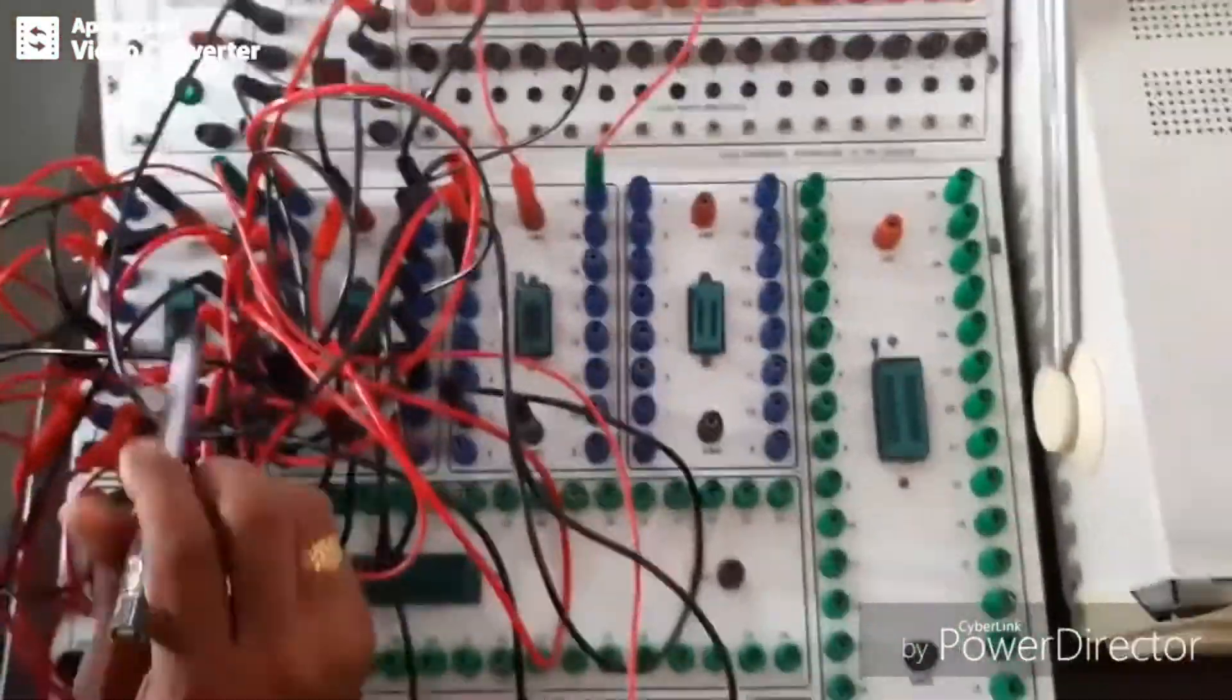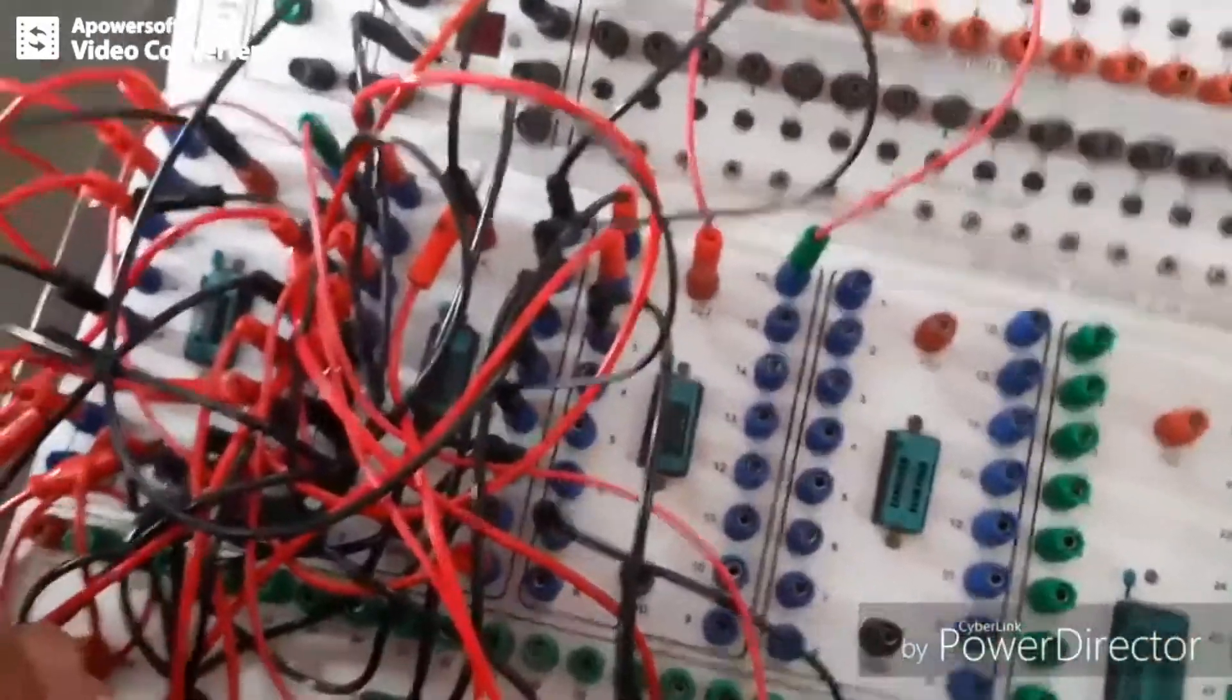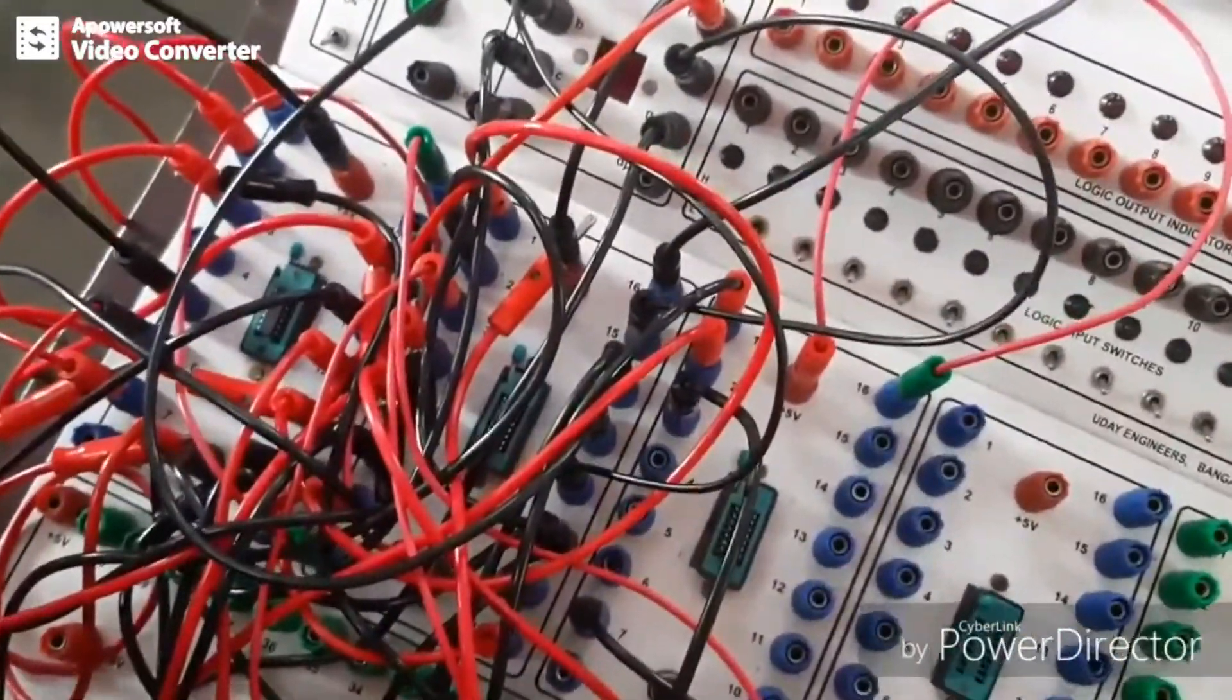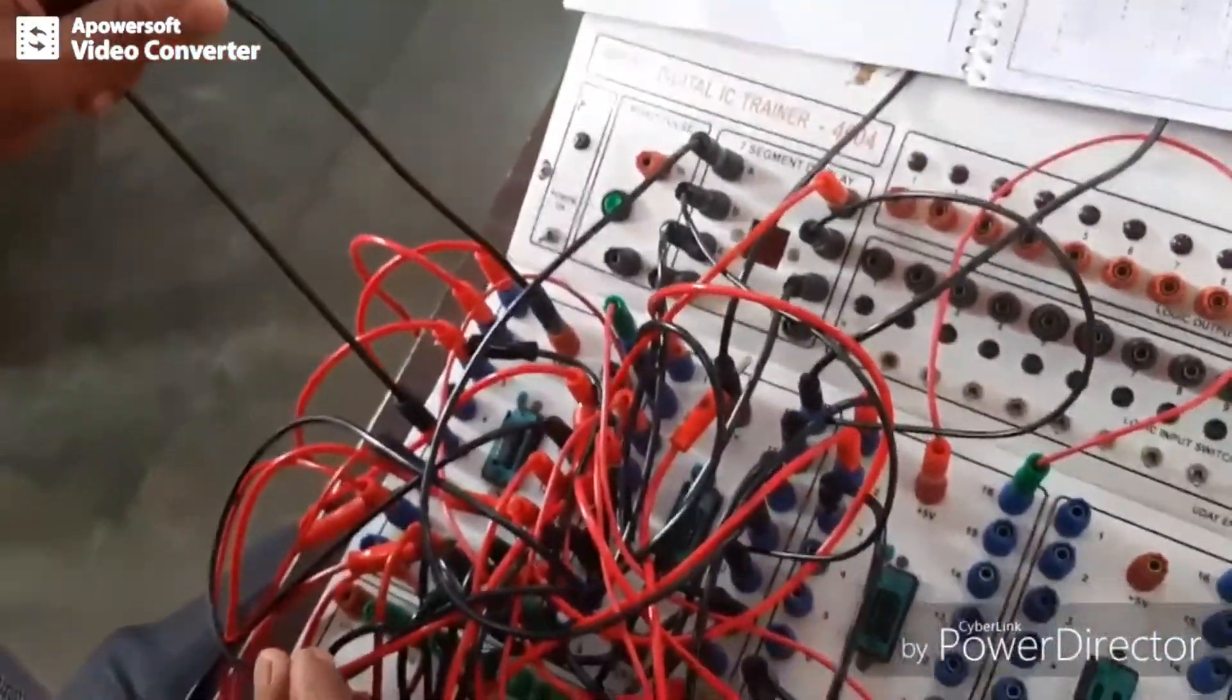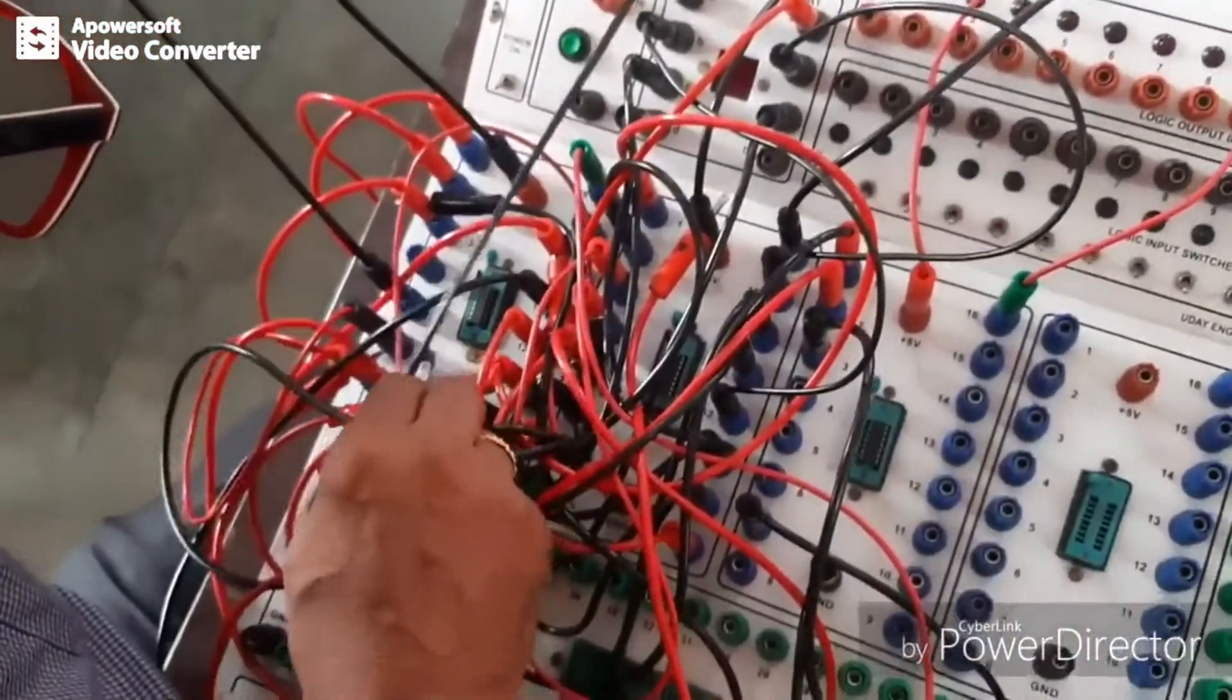In 7490, VCC is pin 5. You can see here, pin 5 is connected to VCC. And ground is pin 10. This is a 14-pin IC.